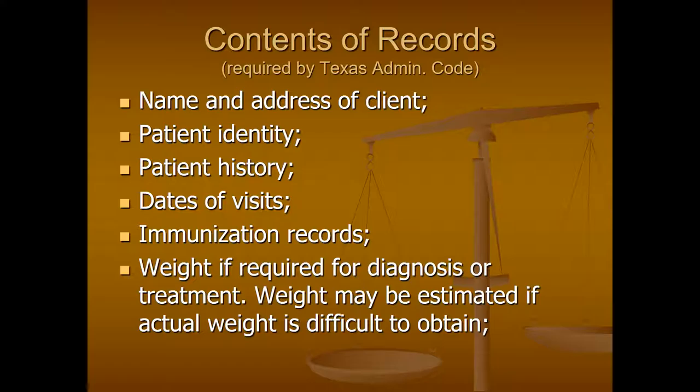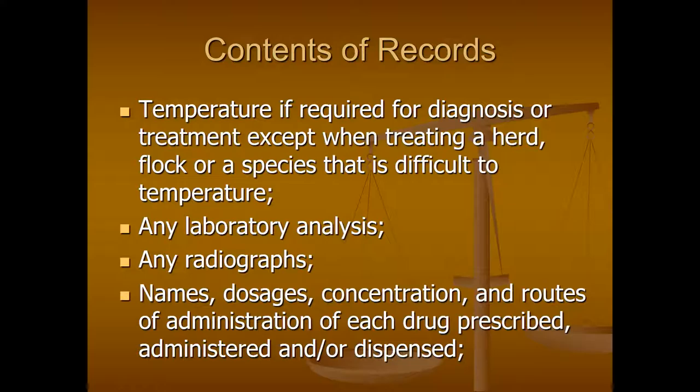For example, in Texas you have to have the name and address of the client, the patient's identity, patient's history, the dates of visits, immunization records, the weight if it's required for diagnosis or treatment — and if it's difficult to obtain, for example with a large animal, the weight can be estimated. Also the temperature if required for diagnosis or treatment, any lab analysis, any x-rays, and medications that are prescribed, administered, or dispensed.